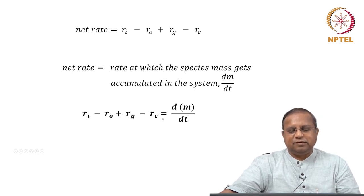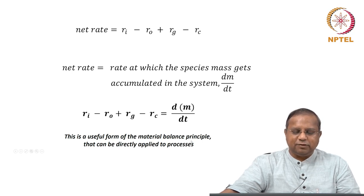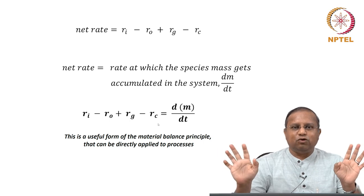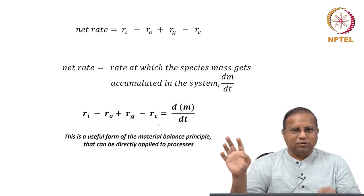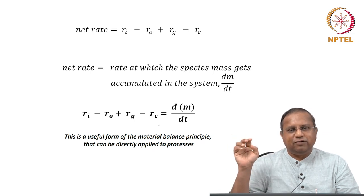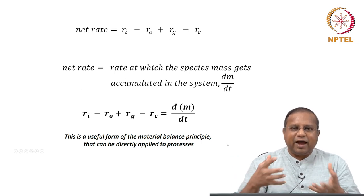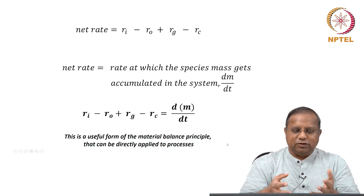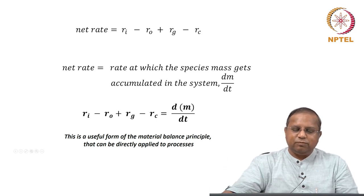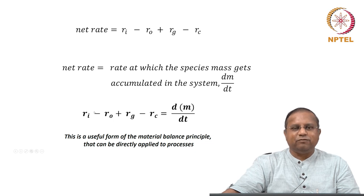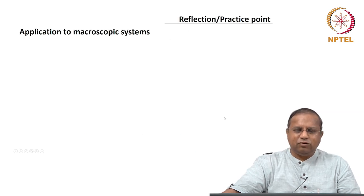This is the useful form of the material balance principle that can be directly applied to various processes, bioprocesses, and so on. Just remember this — you go to a process and blindly apply this, you will not go wrong, as long as you are not dealing with nuclear reactions or travelling at speeds close to that of light. This is always valid, and that is very powerful. This course gives you a principle that can be applied anywhere, anytime, to anything.